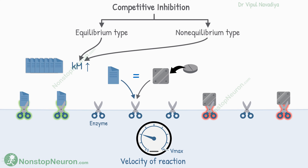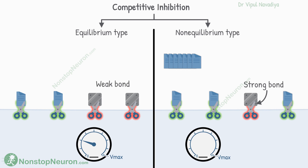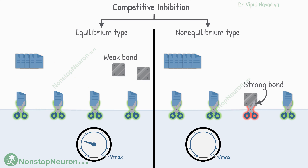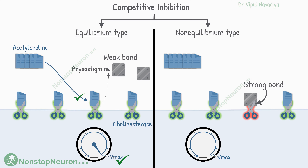In both equilibrium and non-equilibrium types, Km is increased. The difference is in the Vmax. If the bond between the drug and enzyme is weak, an increased concentration of substrate can displace the drug, so maximum velocity can be achieved — Vmax remains the same. This type is called equilibrium-type inhibition. For example, inhibition of cholinesterase by physostigmine is of equilibrium type. Physostigmine makes a weak bond with the enzyme, so its effect can be surmounted by increasing the concentration of acetylcholine.